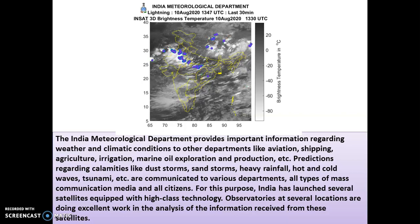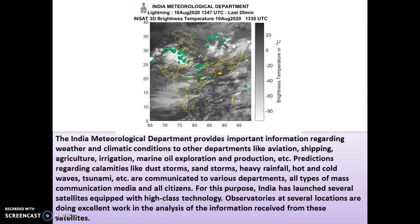Predictions regarding calamities like dust storm, sand storm, heavy rainfall, hot and cold waves, and tsunami are communicated to various departments through all types of mass communication media to all citizens. They give us warning notices — for example, next three days it is going to rain very heavily so don't go out, or there could be a sand storm. Radio and television keep giving us this information. For this purpose India has launched several satellites equipped with high-class technology, and observations at several locations are doing excellent work analyzing information received from those satellites.